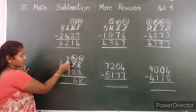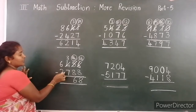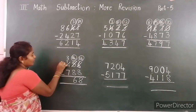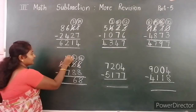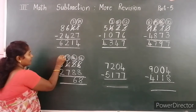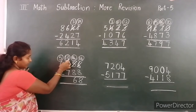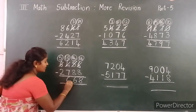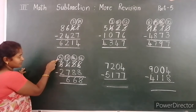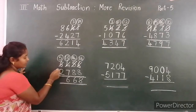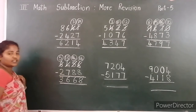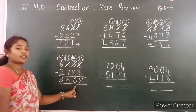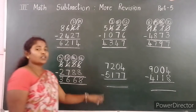Now hundreds place: 3 minus 7. 3 is smaller than 7, so borrow from the hundreds place. Now 13, here 5 left. 13 minus 7 — the difference is 6. Thousands place: 5 minus 2 — the difference is 3. Answer is 3,668.